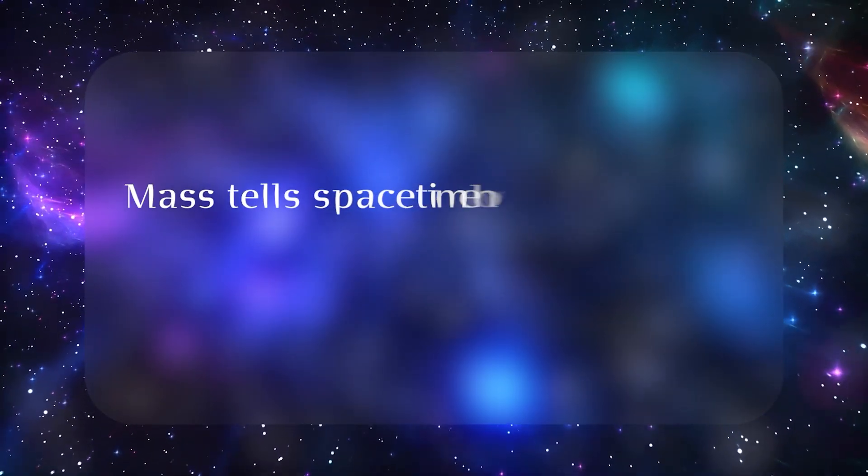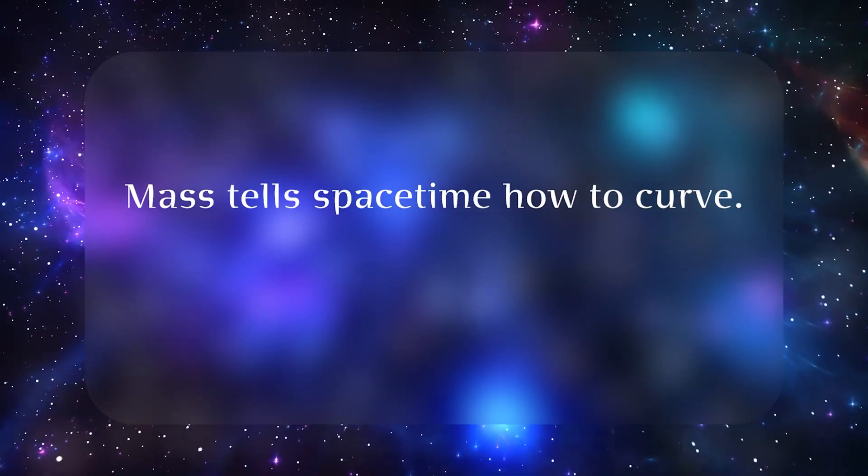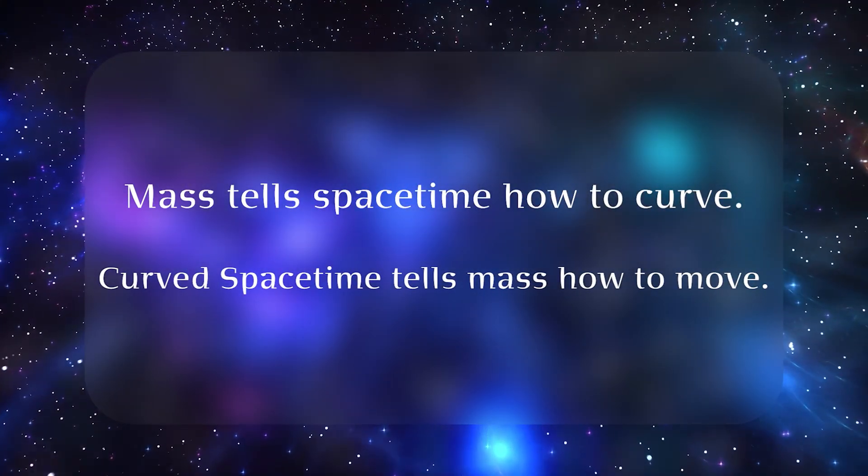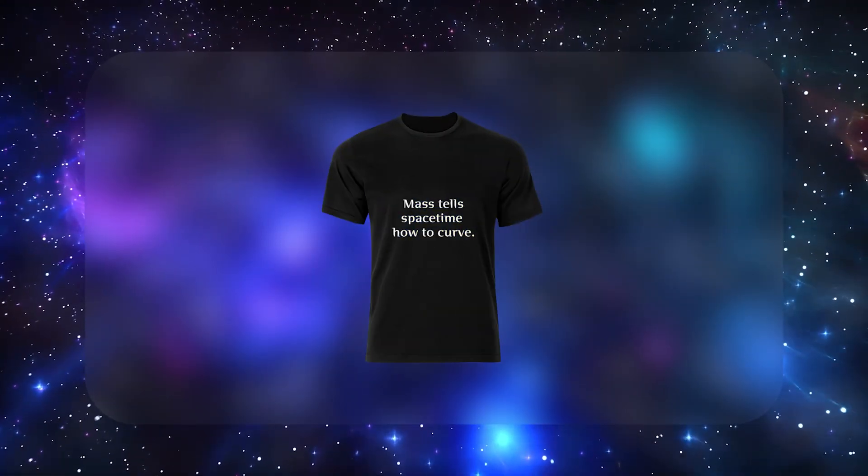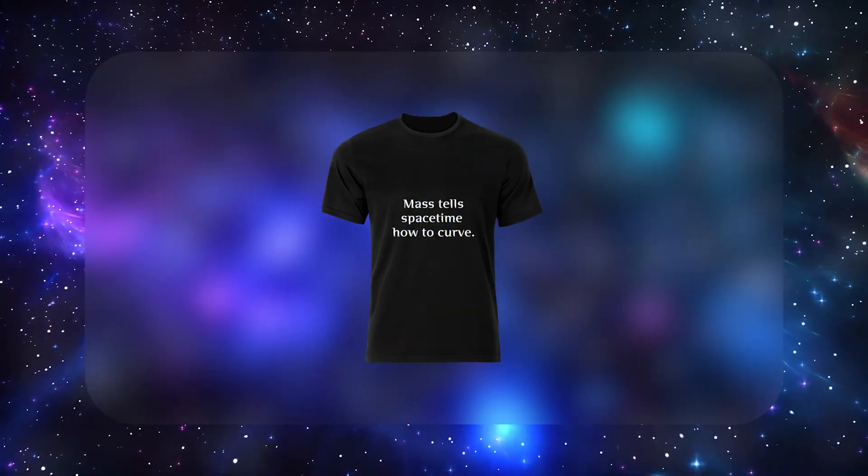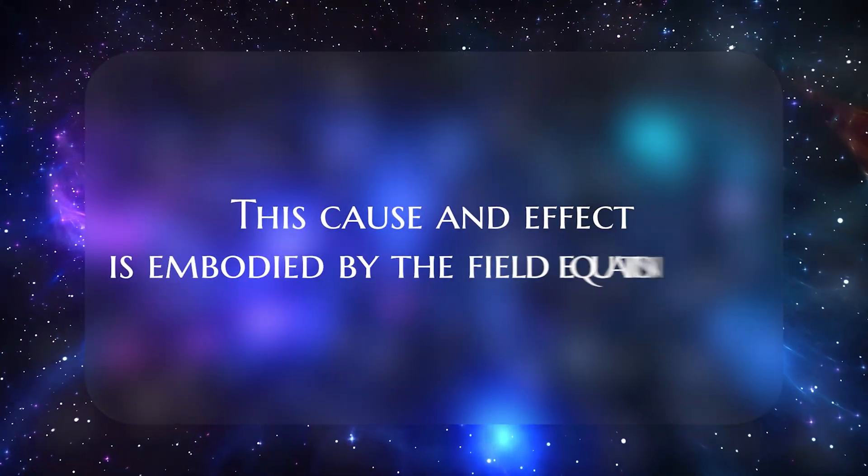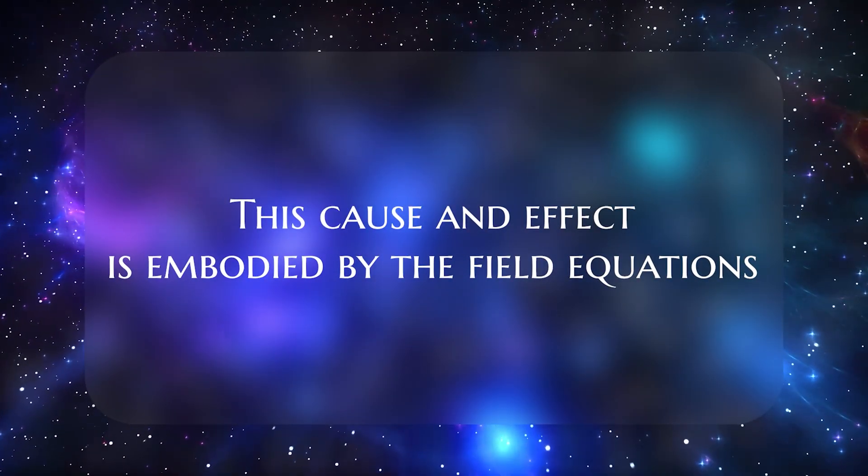If you've spent enough time in conversations about relativity, you've likely heard the phrase 'mass tells spacetime how to curve, curved spacetime tells mass how to move.' While that might sound like a neat slogan on a t-shirt, it's actually the entire theme of general relativity bottled into one sentence. The field equations embody exactly that cause-and-effect structure.